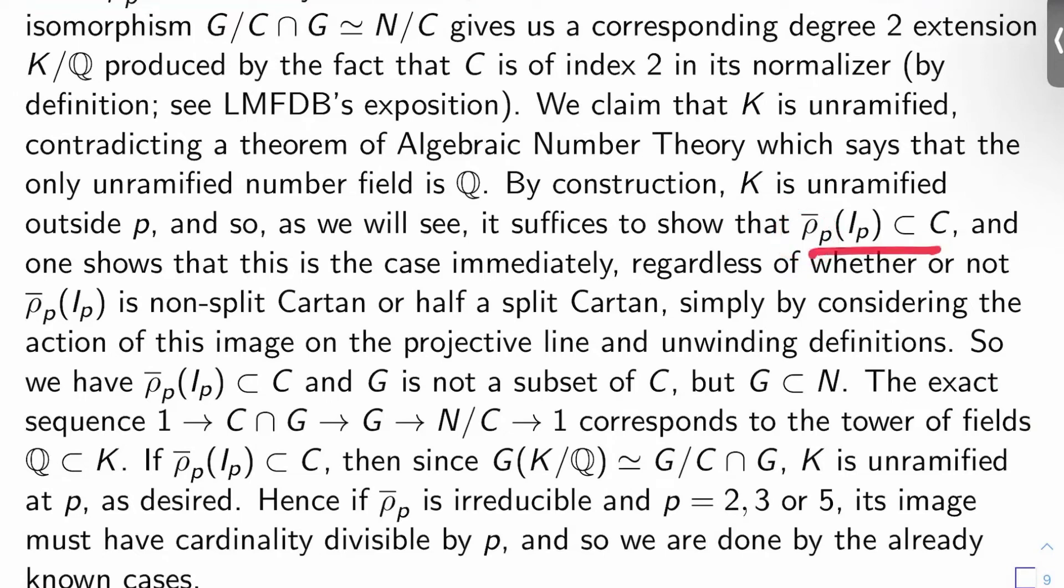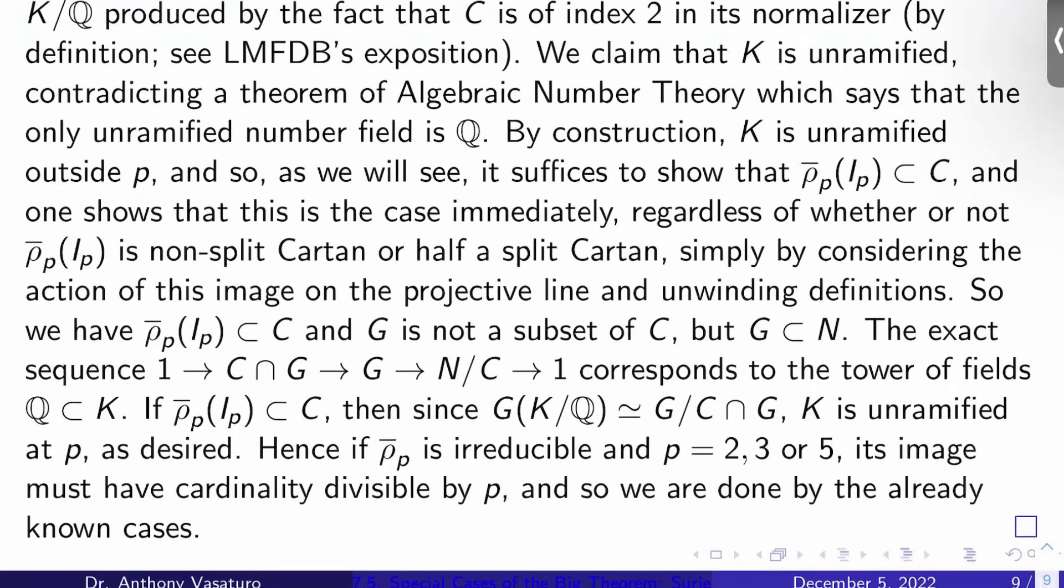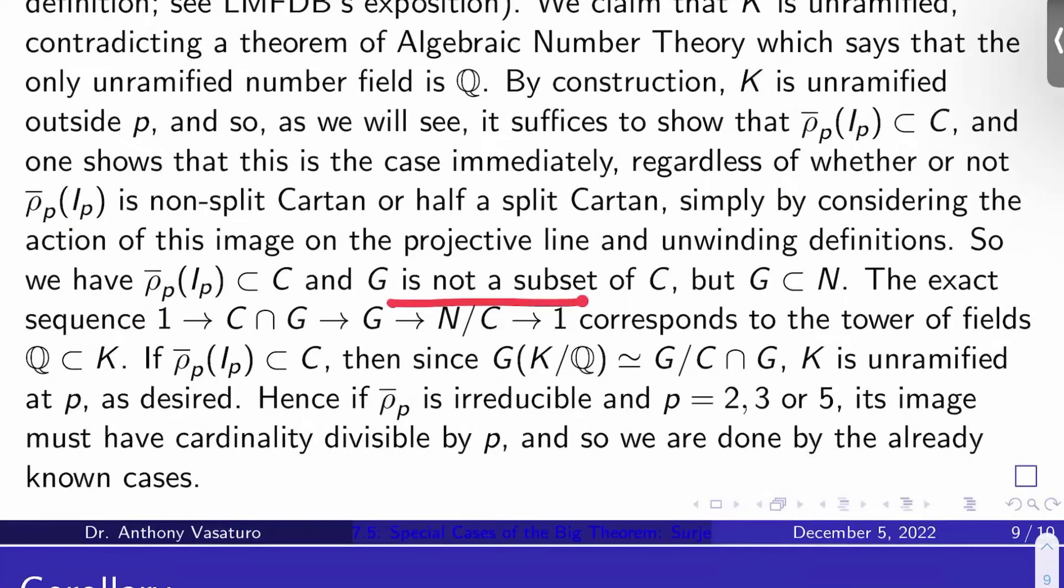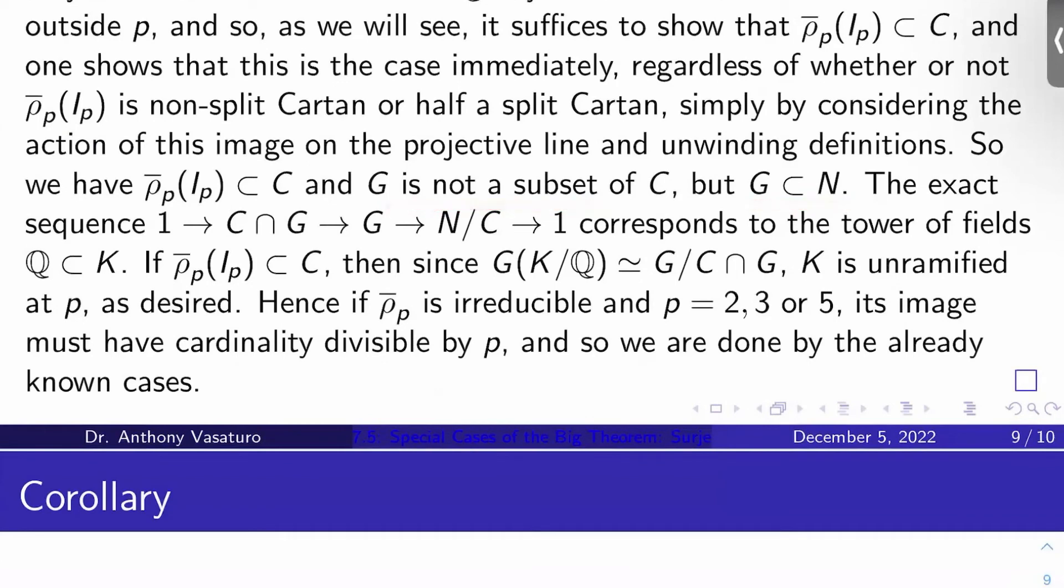Now, for reasons that I'll explain in a moment, it suffices to show that rho bar P of inertia at P is contained in C. Now, I'm not actually going to show this. It's an easy exercise. Regardless of whether or not rho bar P of inertia at P is a non-split Cartan or half a split Cartan, it's easy to show essentially by unwinding definitions and looking at the action of this image on the projective line that this must hold. There's really nothing to it. So the question is, why is it actually enough to show this?